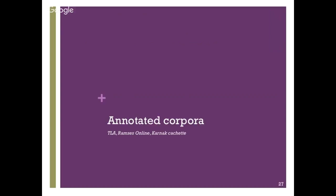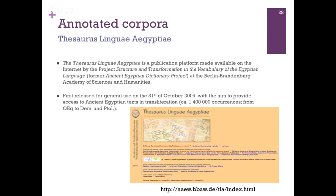As far as proper annotated corpora are concerned, I'm going to talk about the three main projects in Egyptology nowadays: the Thesaurus Linguae Aegyptiae in Berlin, Ramses Online developed in Liège, and the Karnak Cachette developed by Laurent Coulon with the help of Vincent in Paris. The first is the famous Thesaurus Linguae Aegyptiae — a publication platform made available on the net by the Berlin-Brandenburg Academy, with its first release for general use in October 2004.